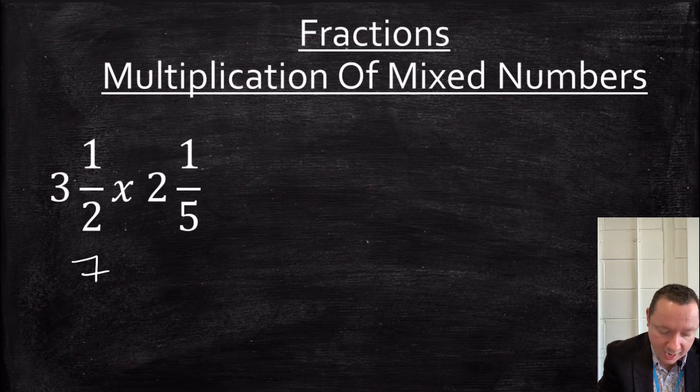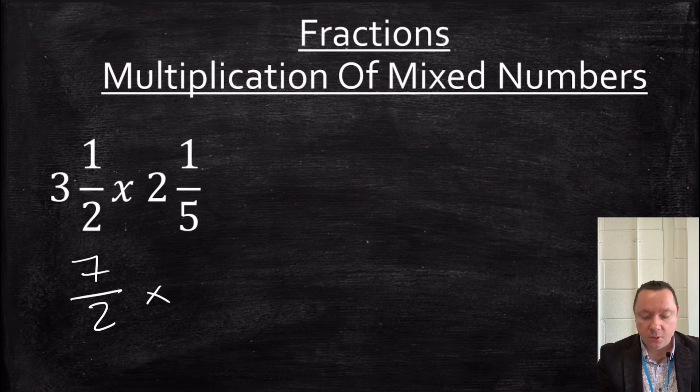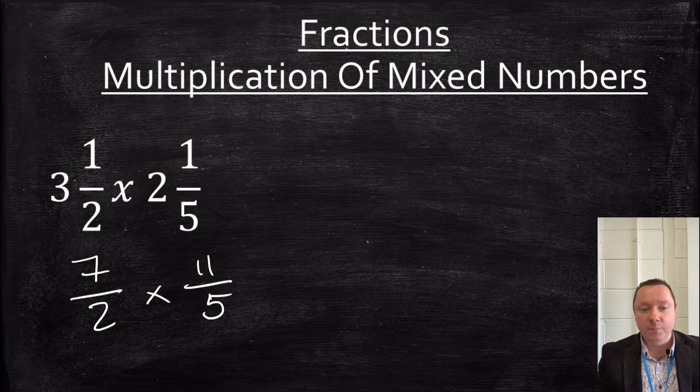So I've got 7 halves times. And the same with the fifths. So I'm asking how many fifths are in 2? 2 fives are 10. 10 plus an extra 1 makes 11. So I've got 11 fifths. And now the sum is very simple. You can just times the top and times the bottom.